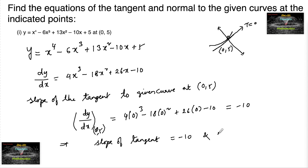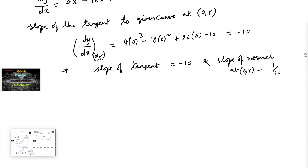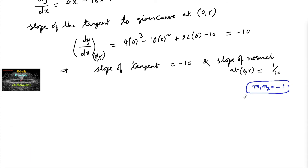The slope of the normal at point (0, 5) can be taken as 1/10, since we know that tangent and normal are perpendicular, meaning m₁ × m₂ = -1. Using this relation, the slope of the normal is 1/10.